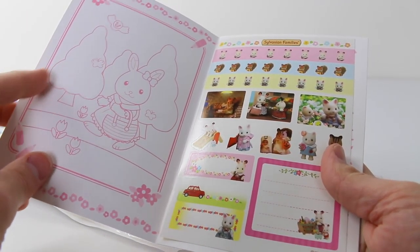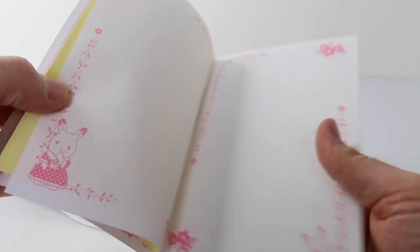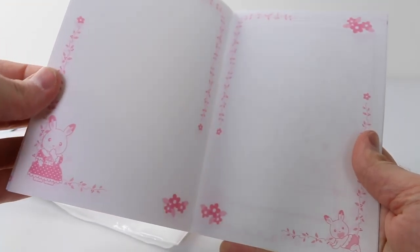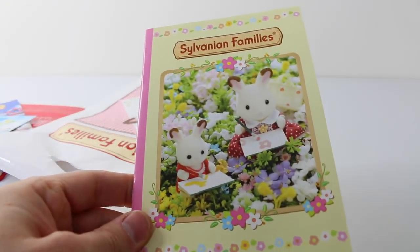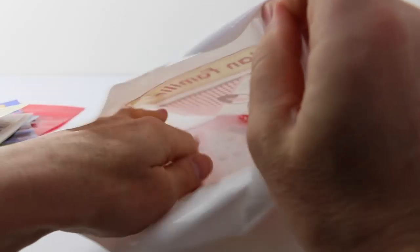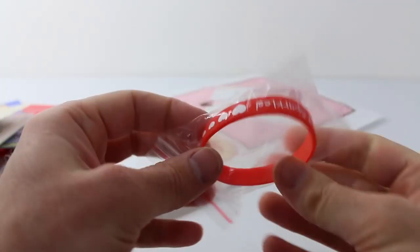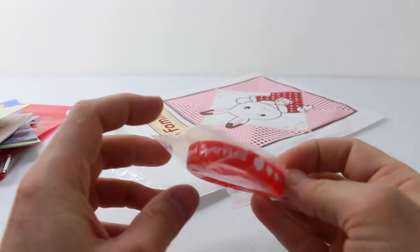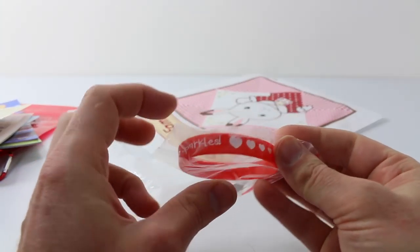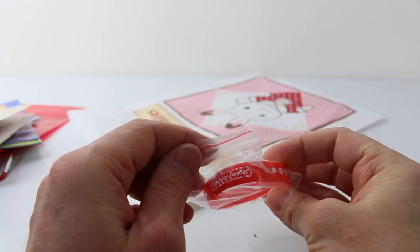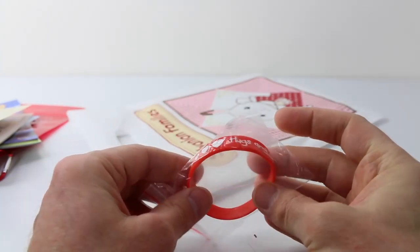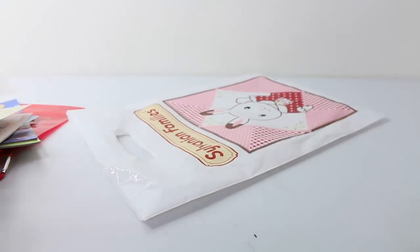We also have this activity book and this is filled with stickers and coloring in pictures, as well as you can take notes and draw your own pictures. And the last thing we have is a red bracelet and it has hugs and sparkles and we have little hearts going around the outside. So that is super cute.